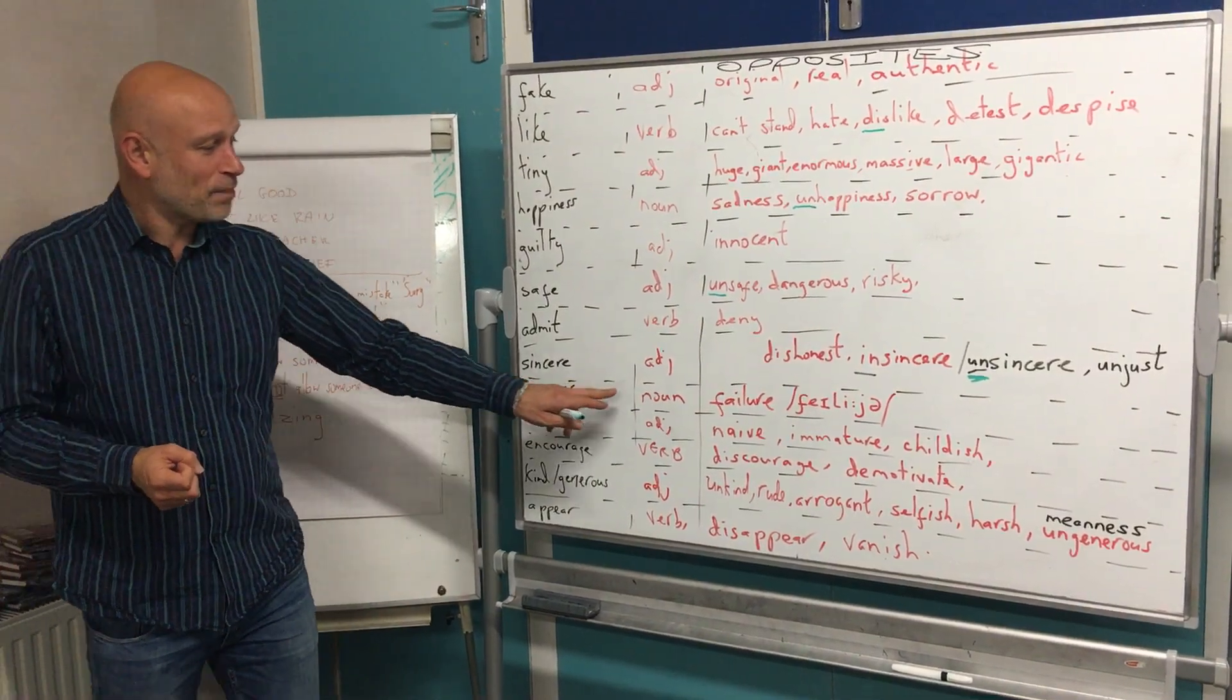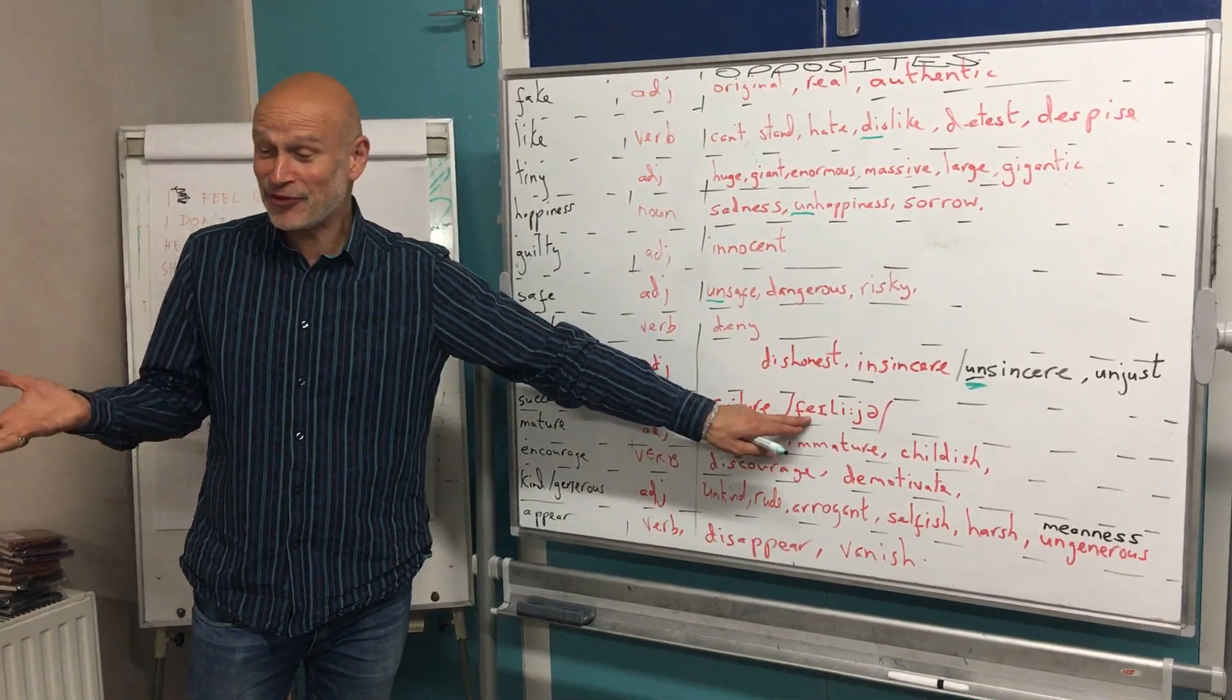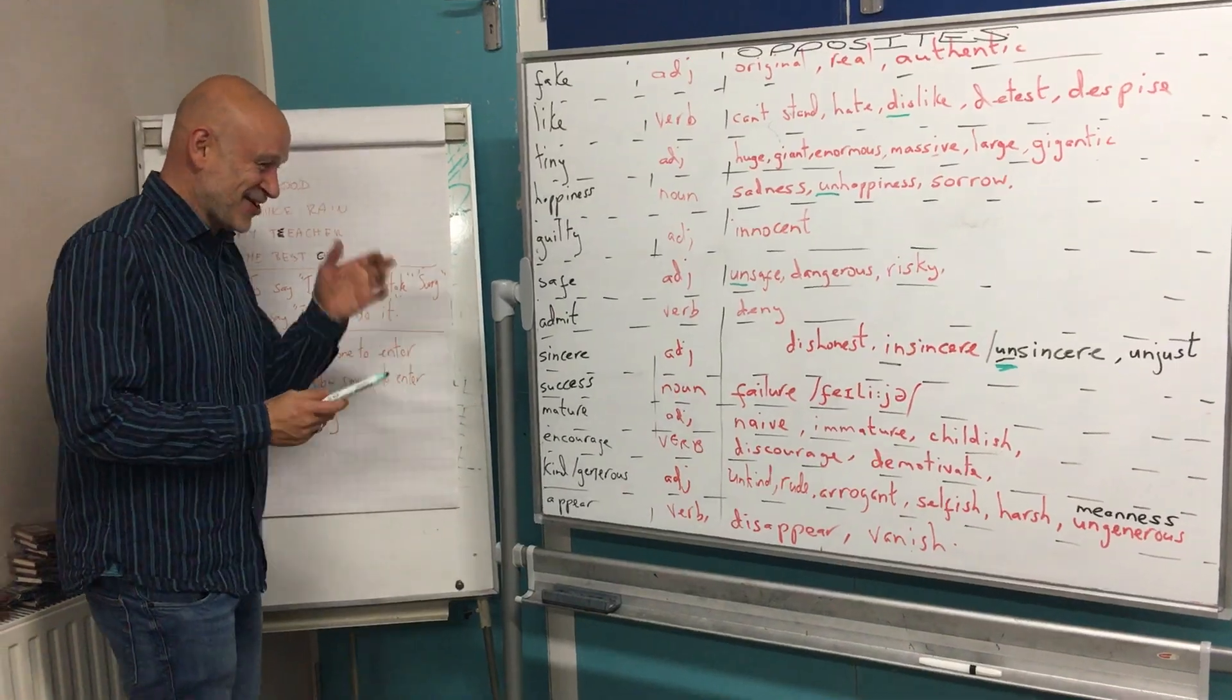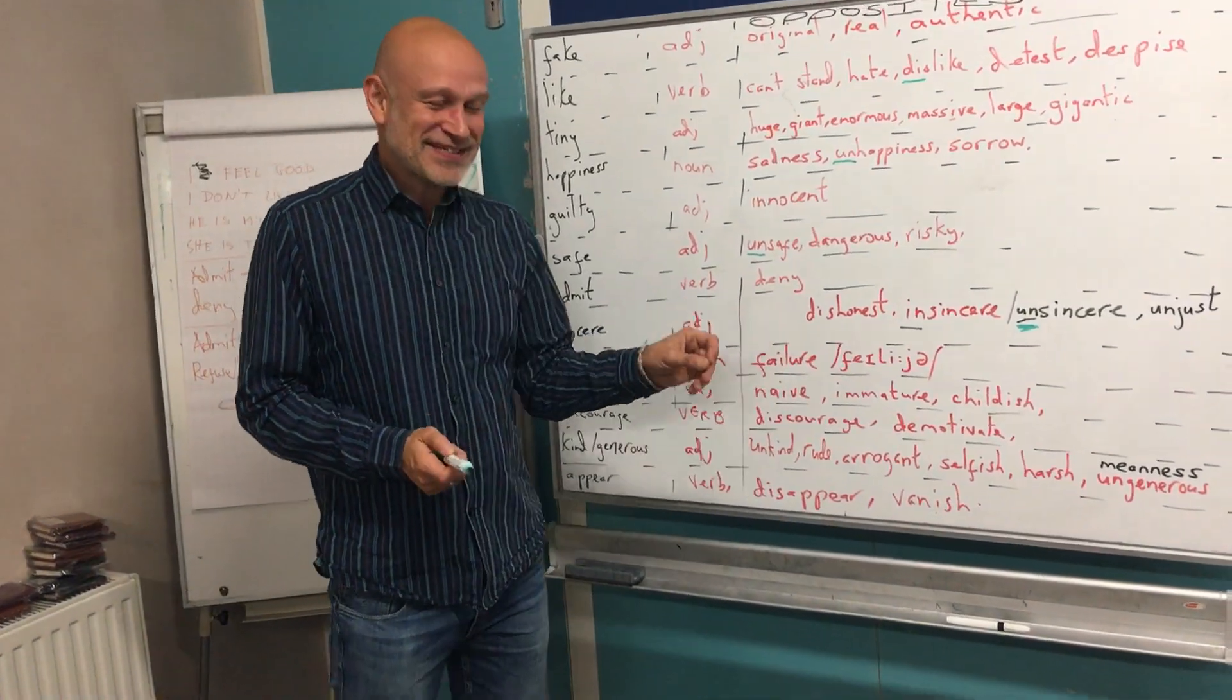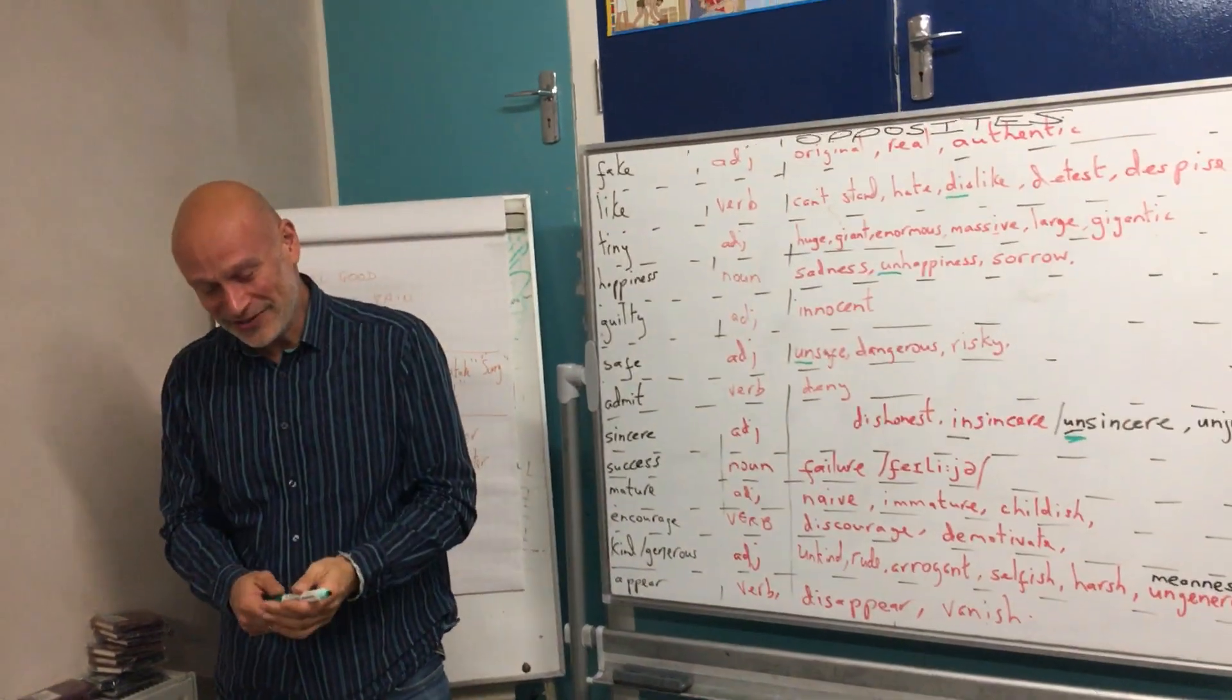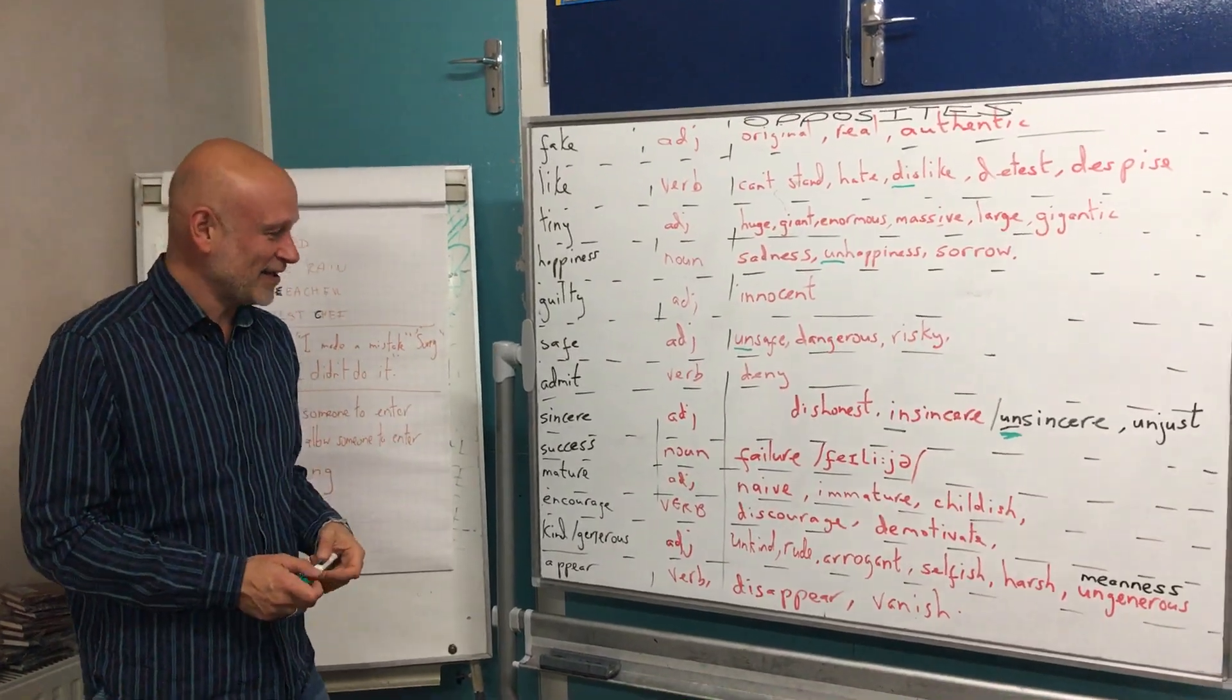Success. The opposite of that which is a noun. Are you ready for my pronunciation? She's left the room. No, she's there. Sorry. The opposite of success. Oh, I know. It's been a long day. The opposite of success is failure. Failure.